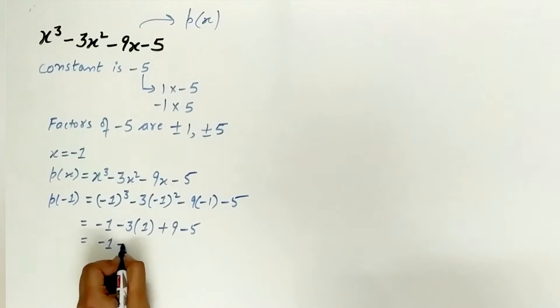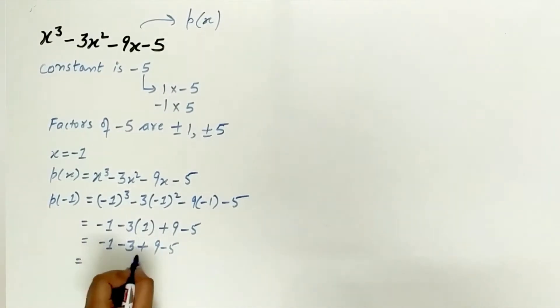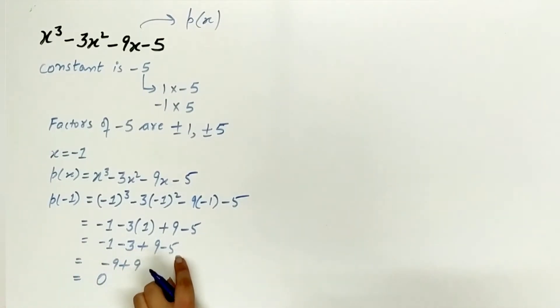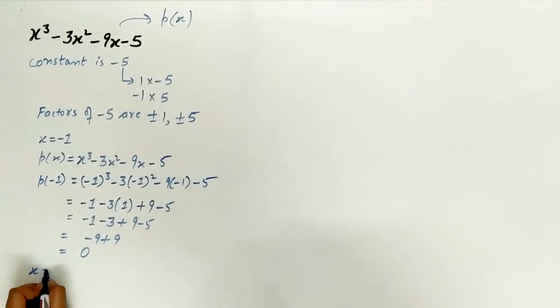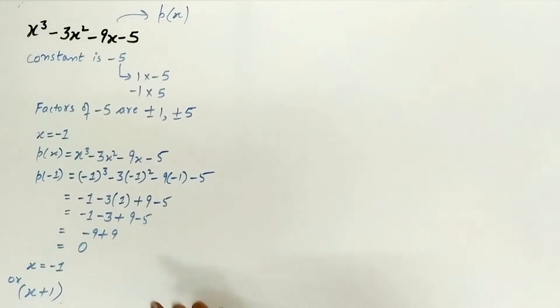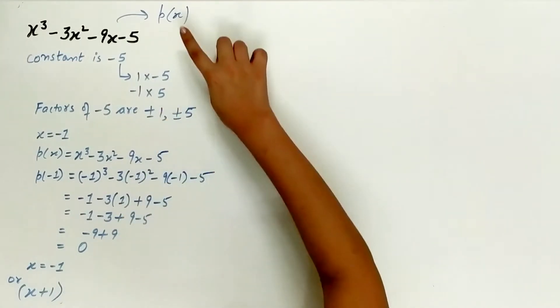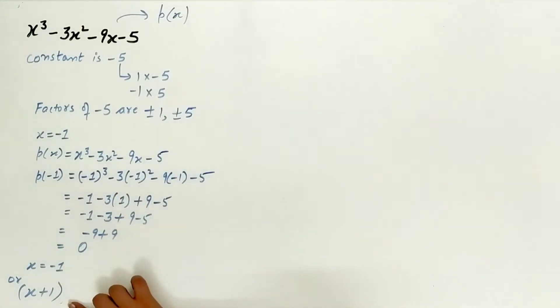Minus 3 multiply 1 is minus 3. Minus 3 plus 9 is 6, 6 minus 5 is... actually minus 9 plus 9 is 0. So x equals minus 1, or x plus 1 equals 0. Step 3 is to divide p(x) by x plus 1.